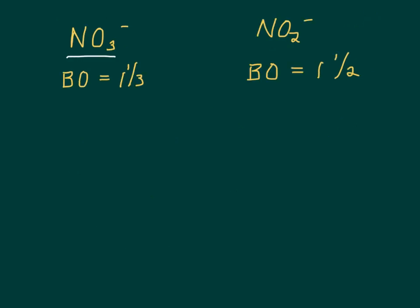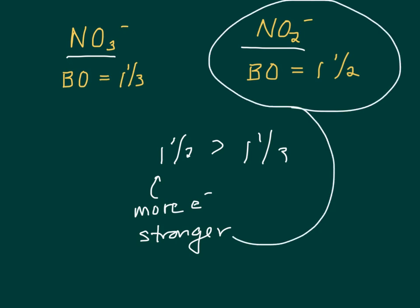So nitrate had a bond order of one and a third. And nitrite had a bond order of one and a half. Well, one and a half is bigger than one and a third, right? That means this has more electrons in it. It means it's stronger. So the bonds in nitrite are stronger than the bonds in nitrate. So bond order just gives us an idea of how strong the bonds are.